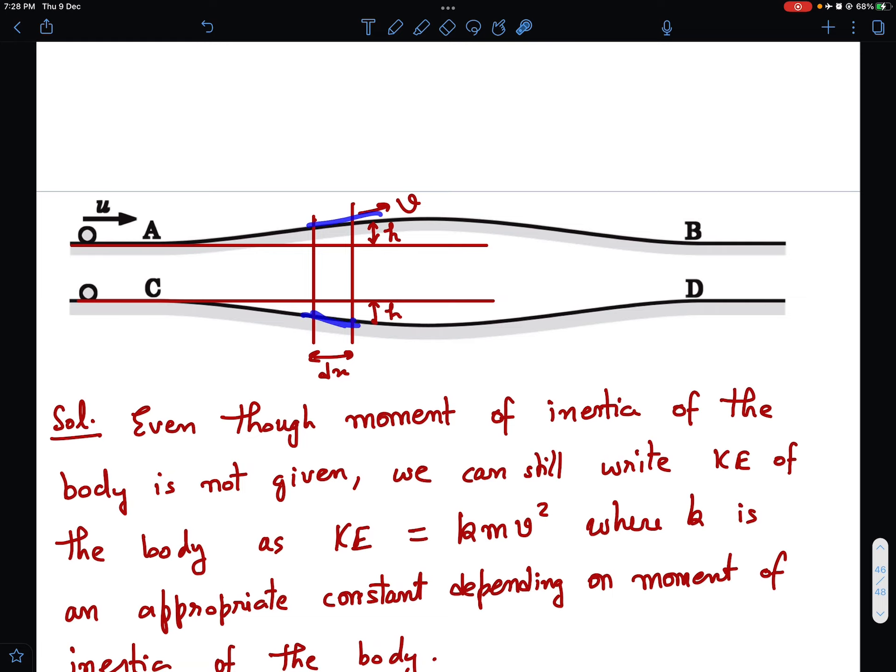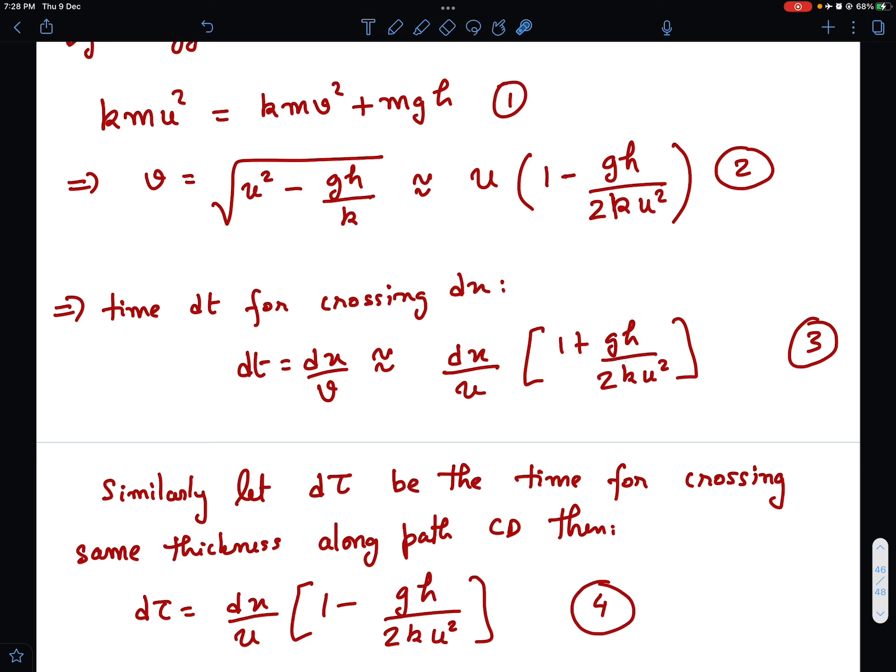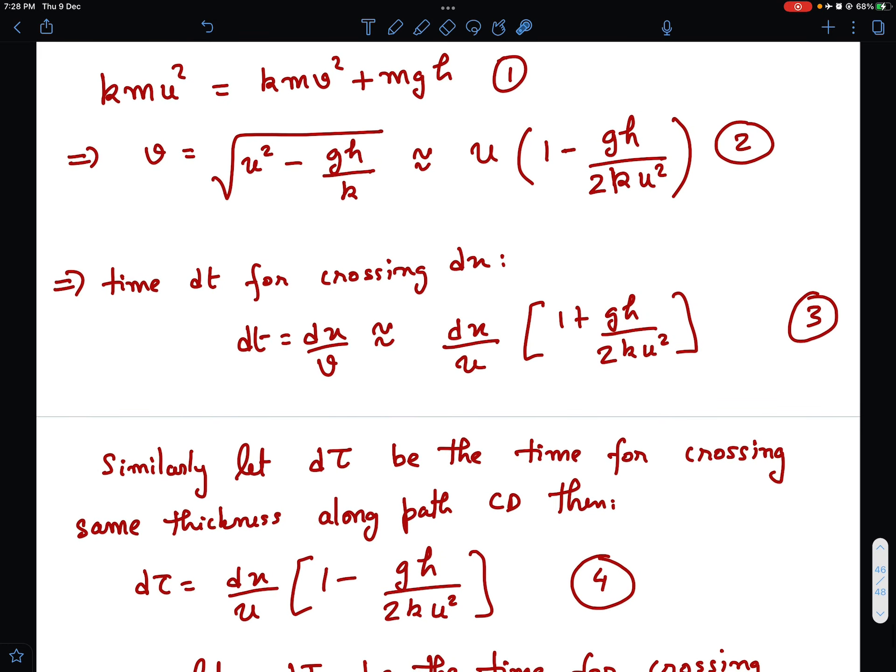Now, if you see the track CD, since track CD is just mirror image of track AB, from horizontal if this height is H, so here this depth will be H. So that means the results for CD can be simply obtained by replacing H by -H on track CD. Whatever we got for AB, there H should be replaced with -H to get the similar results for track CD. So I have called that time dτ. This is the time taken along the path CD which is concave path.